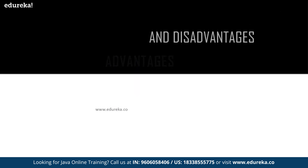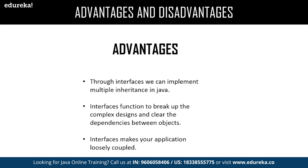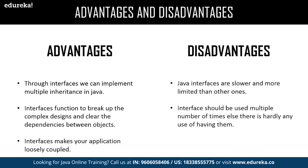Let us get into the major advantages and disadvantages of interface. Advantages: we can achieve multiple inheritance in Java; we can easily break up complexity and enable clear dependency between the objects; we can achieve loosely coupled applications through an interface. Disadvantages: Java interfaces make the application slower compared to competitors like Python which support multiple inheritance. Also, once an interface is included in an application, it might be used once in a while or used multiple times at a larger scale.